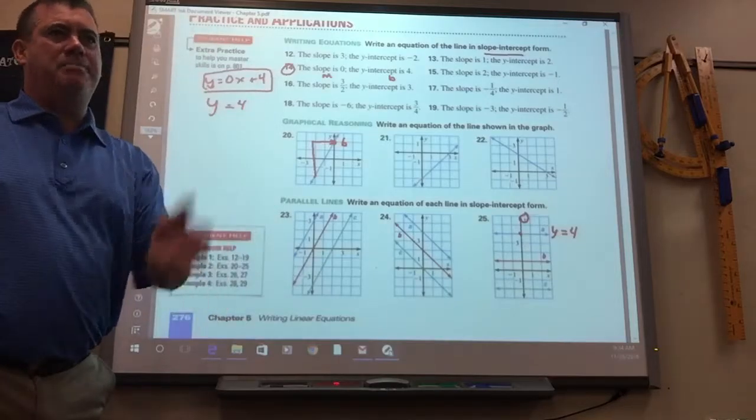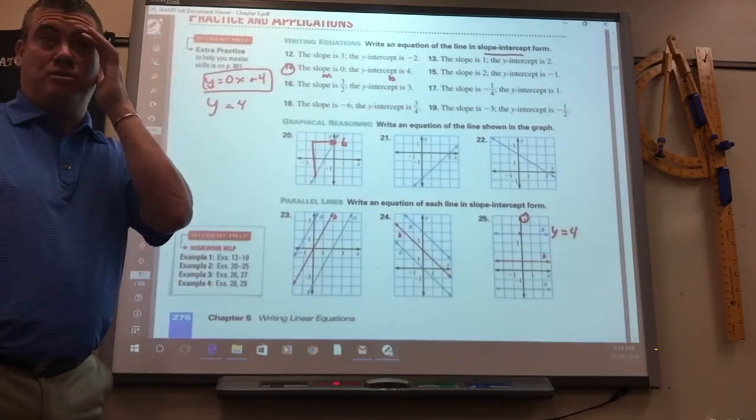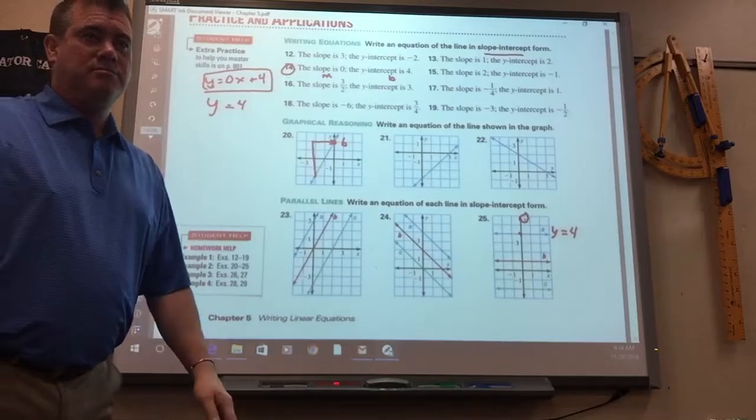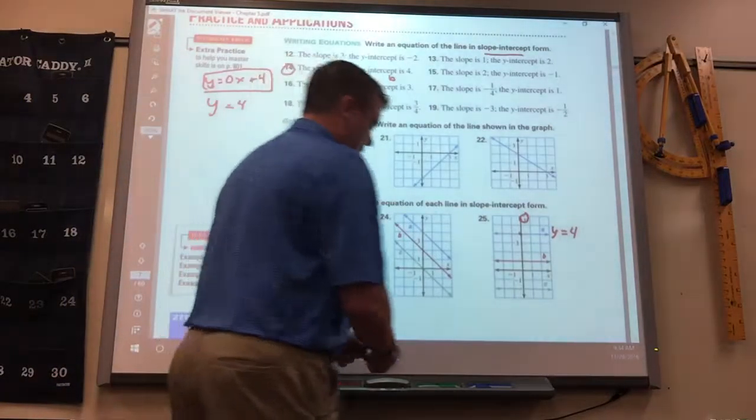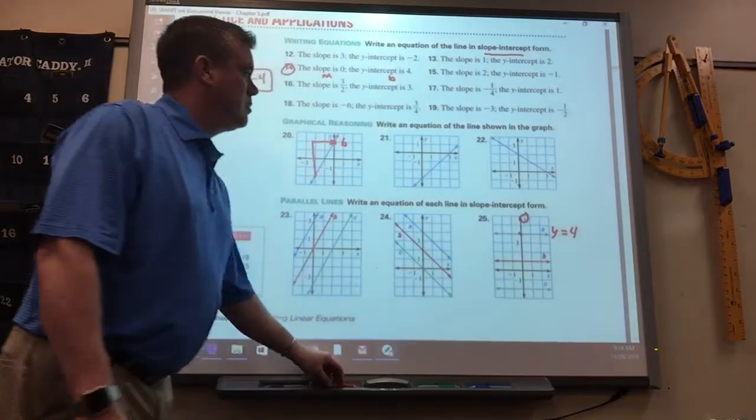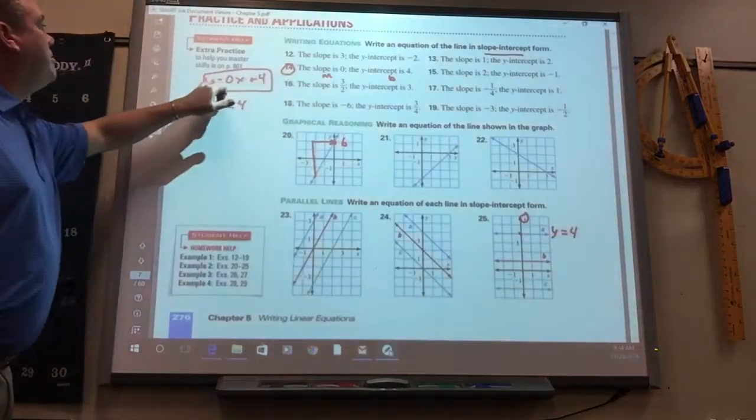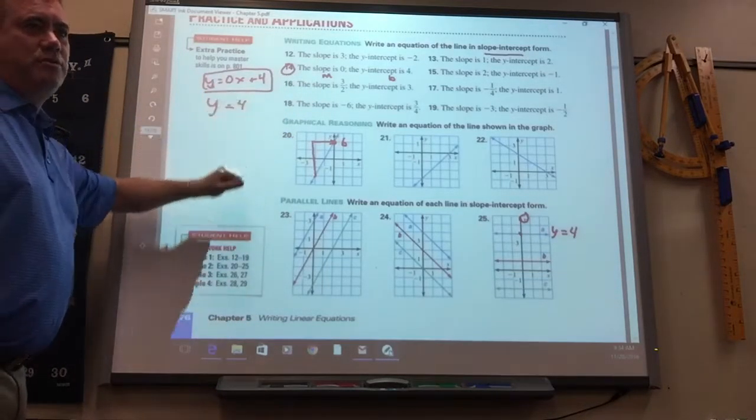Remember, if it goes straight up and down, it's X equals whatever number it goes to. So 4 can be 0X plus 4. Right there? Yep. 0X plus 4, or you can write it as Y equals 4.